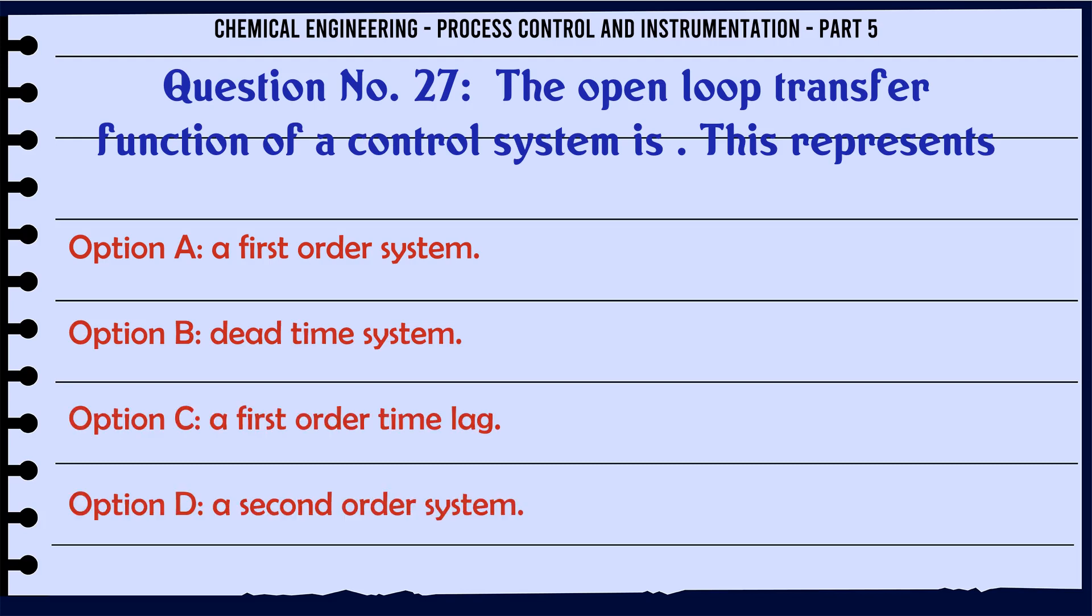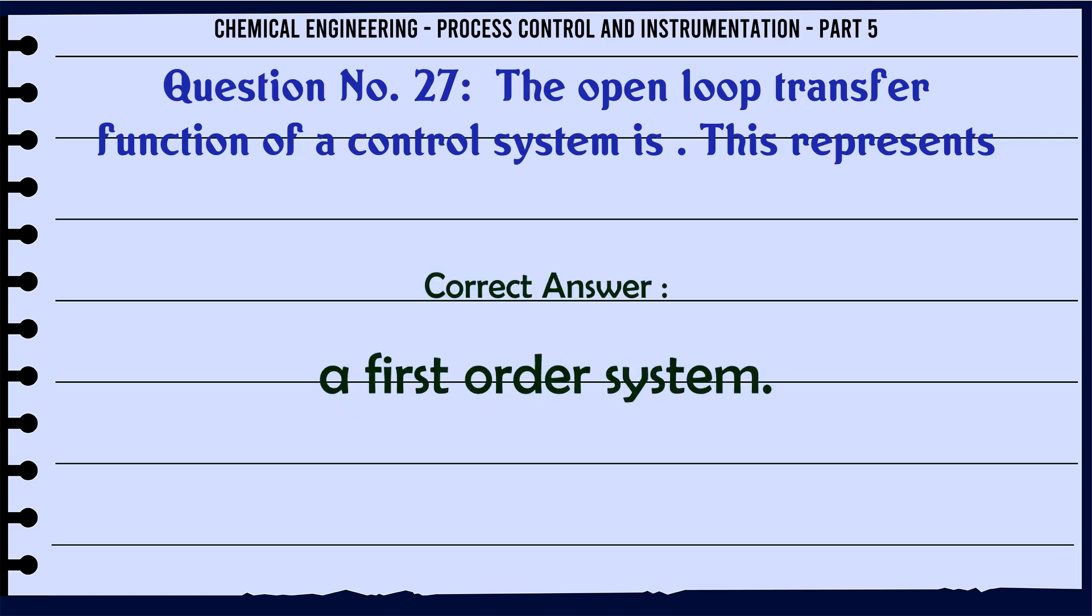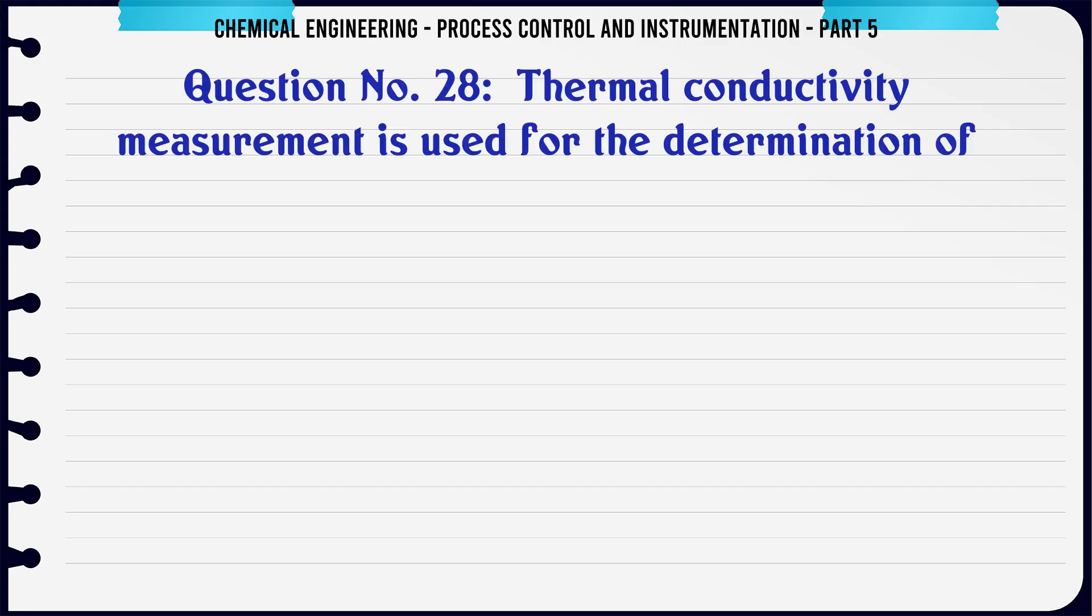The open loop transfer function of a control system is given. This represents: A. A first order system. B. Dead time system. C. A first order time lag. D. A second order system. The correct answer is A first order system.